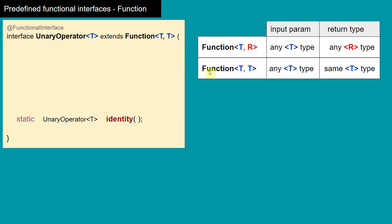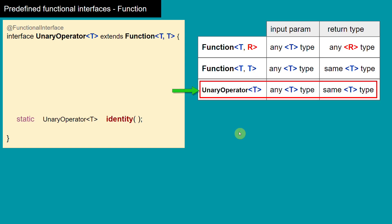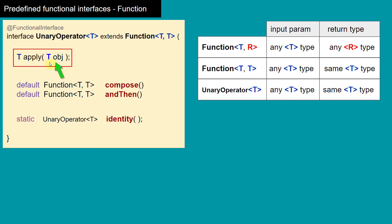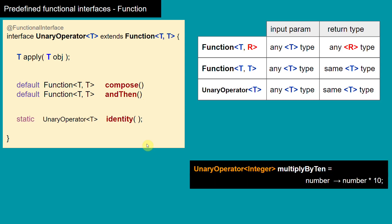Instead of writing Function<T, T> as its generic parameter type, we can simply write UnaryOperator<T>, which means it takes any type of object as input and returns the same type as its return value. In UnaryOperator we have an inherited abstract method that takes any type of input argument and returns the same type. It also inherits two default methods from the Function interface: compose and andThen, which we covered in the previous video.